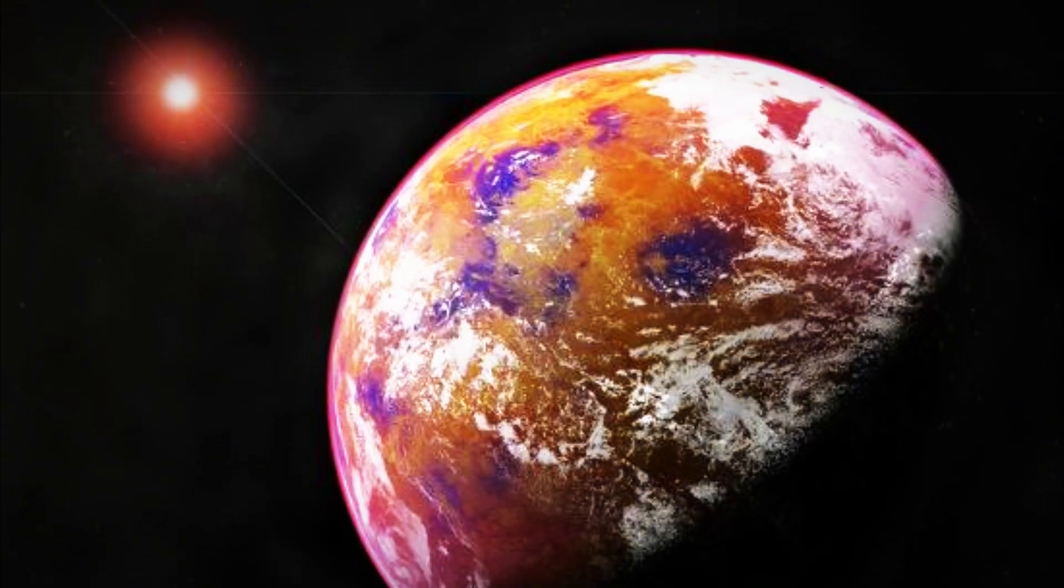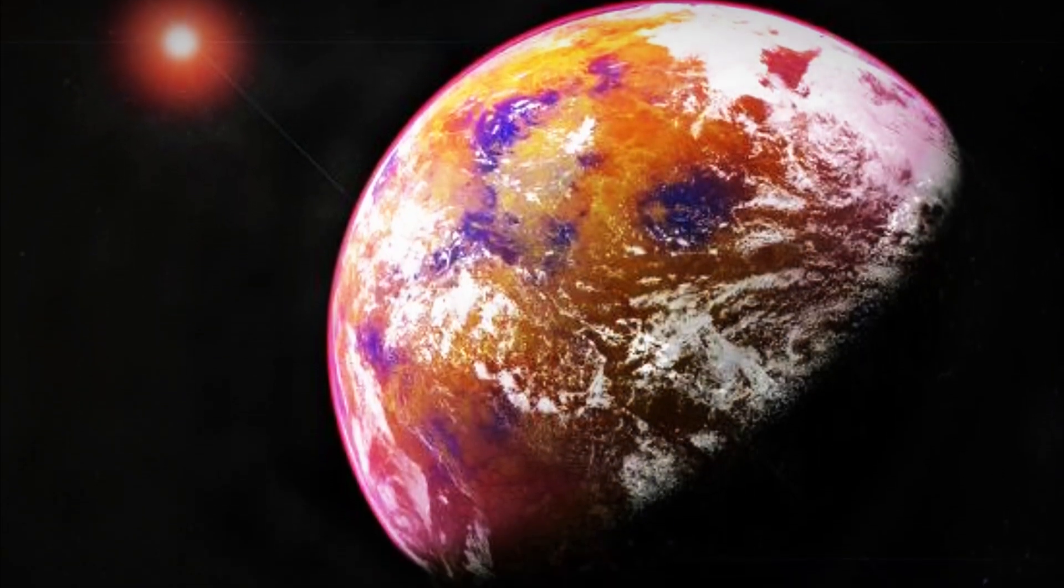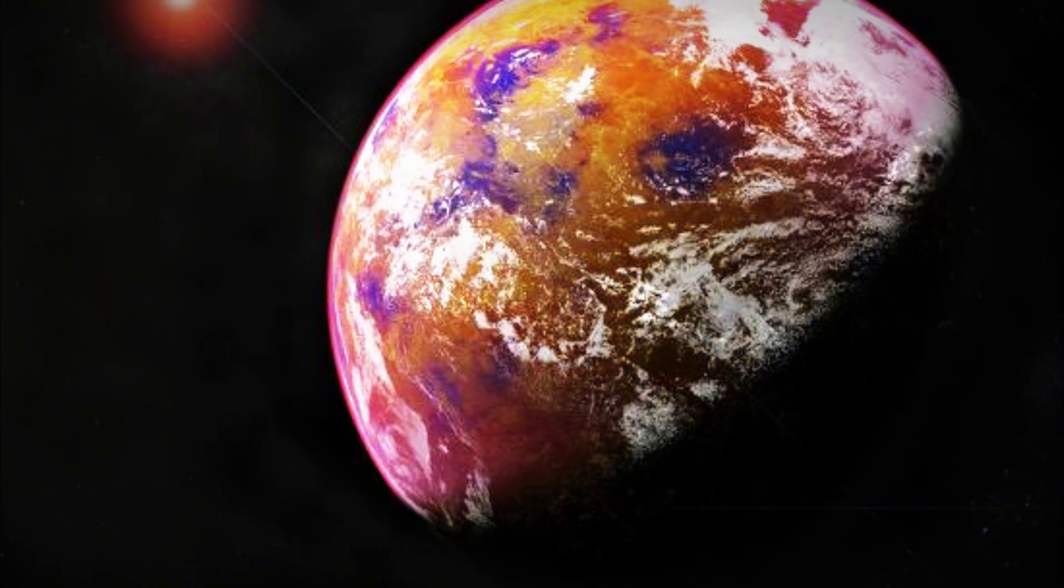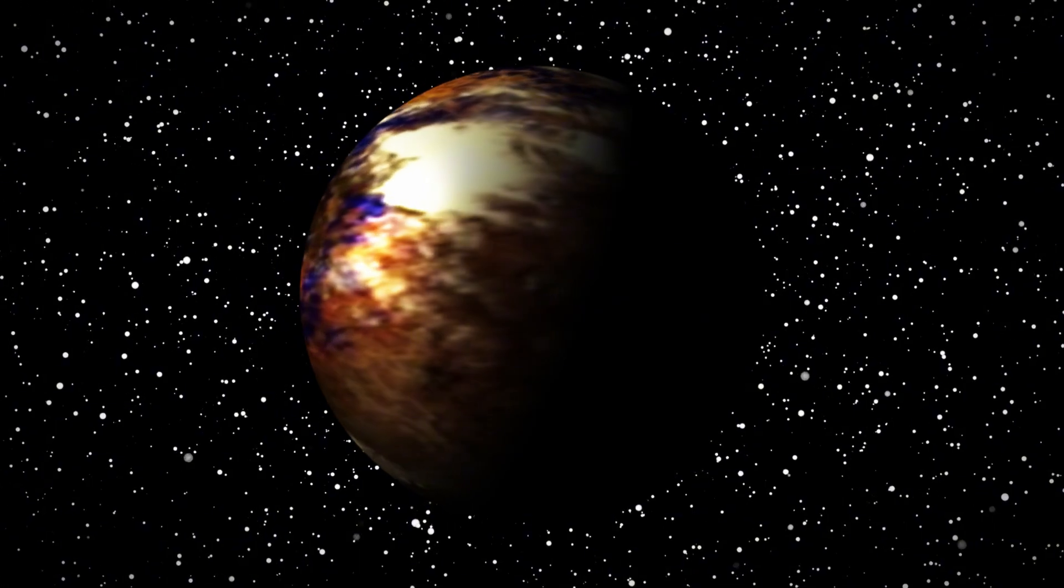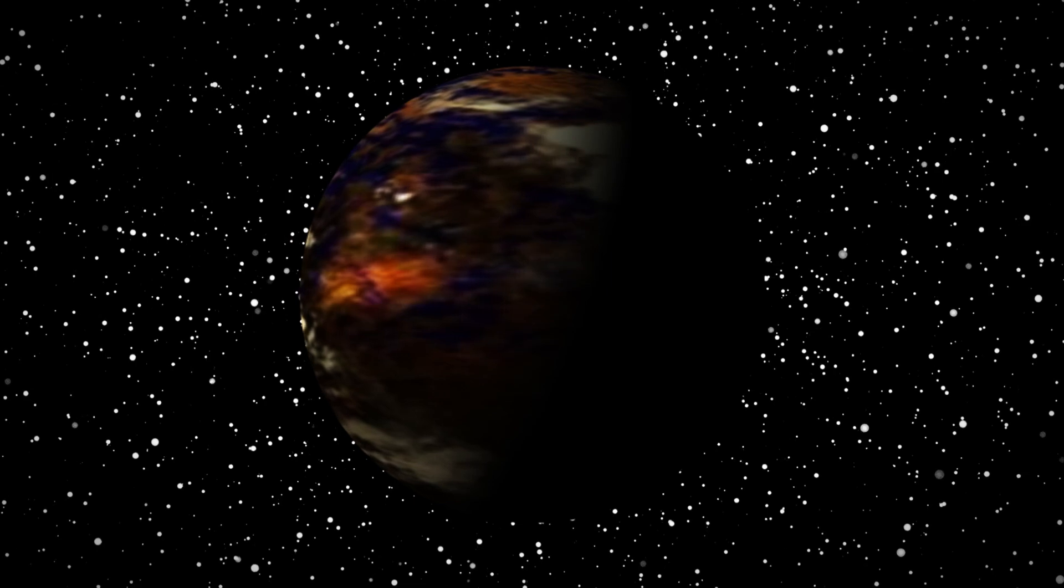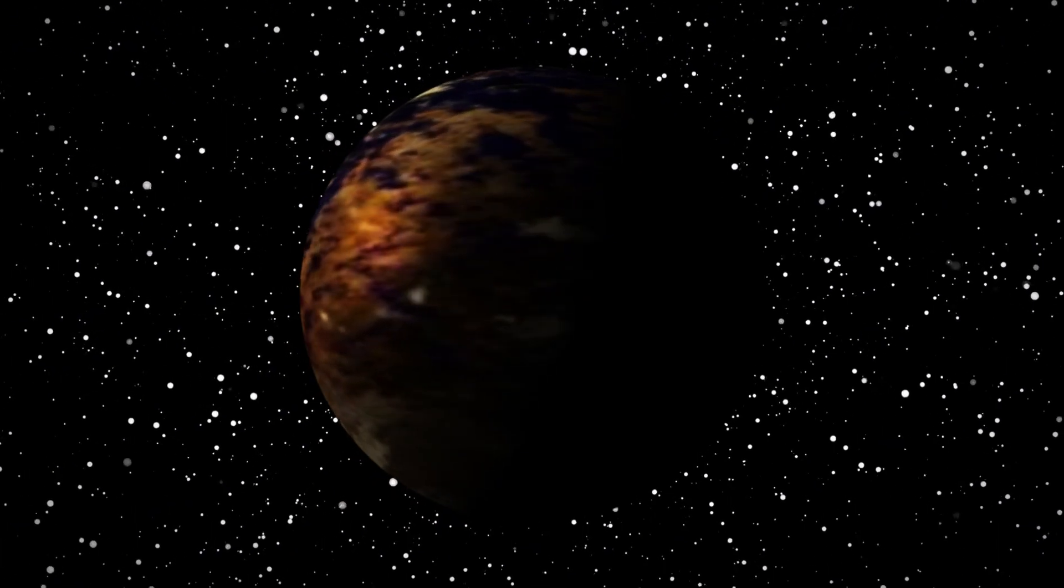Given this, what would it be like to stand on Proxima b and gaze at its parent star? Proxima Centauri, appearing about three times larger than the Sun, would present itself as a dim red sphere in the sky. If Proxima b lies within its star's habitable zone, liquid water might be possible.